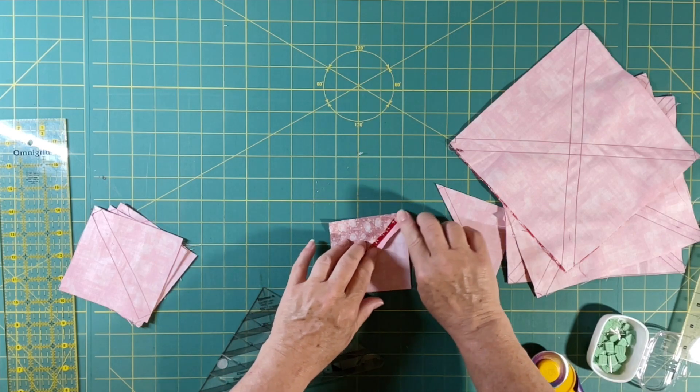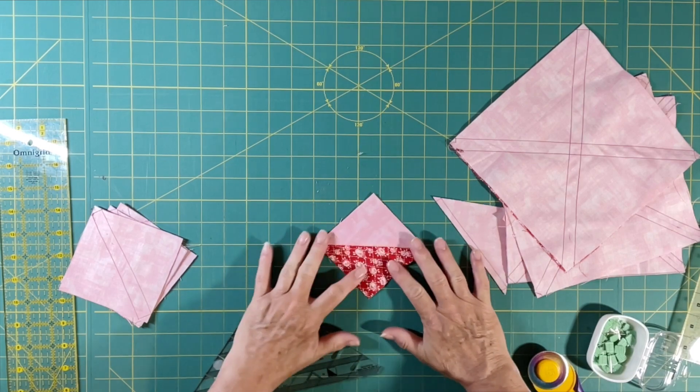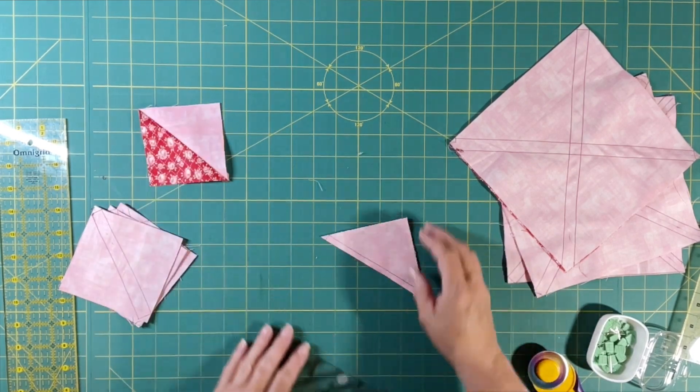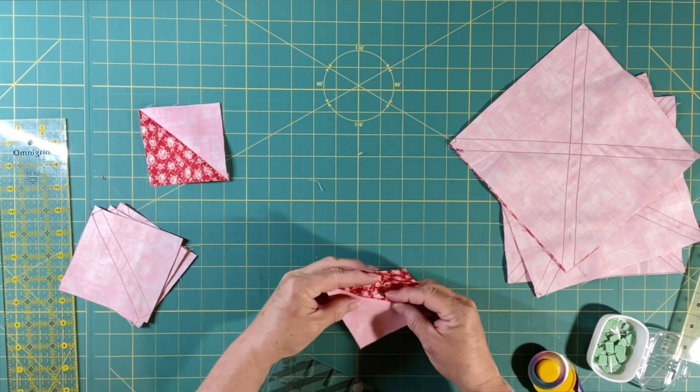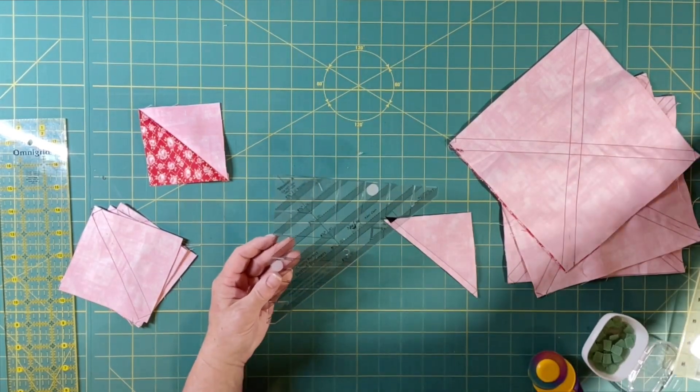I can press to the dark side which is very common to do, or press it open which is my preferred method usually. So in that case that particular half square triangle is done.